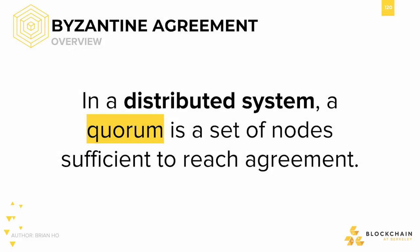Before diving into federated consensus, we're going to refresh ourselves with the definitions of all the terminology we've picked up thus far. Remember that a quorum in a distributed system is a set of nodes sufficient to reach agreement. In PBFT, that's over two-thirds of the voters. We refer to this as a Byzantine agreement within a BFT consensus algorithm.